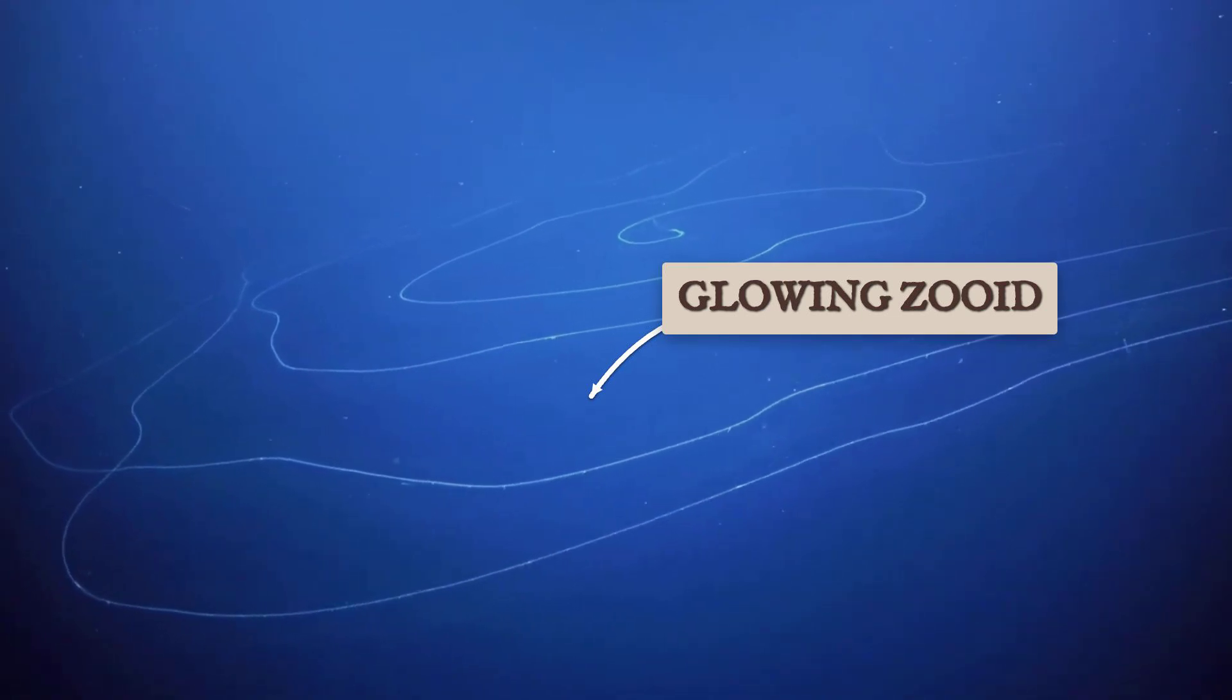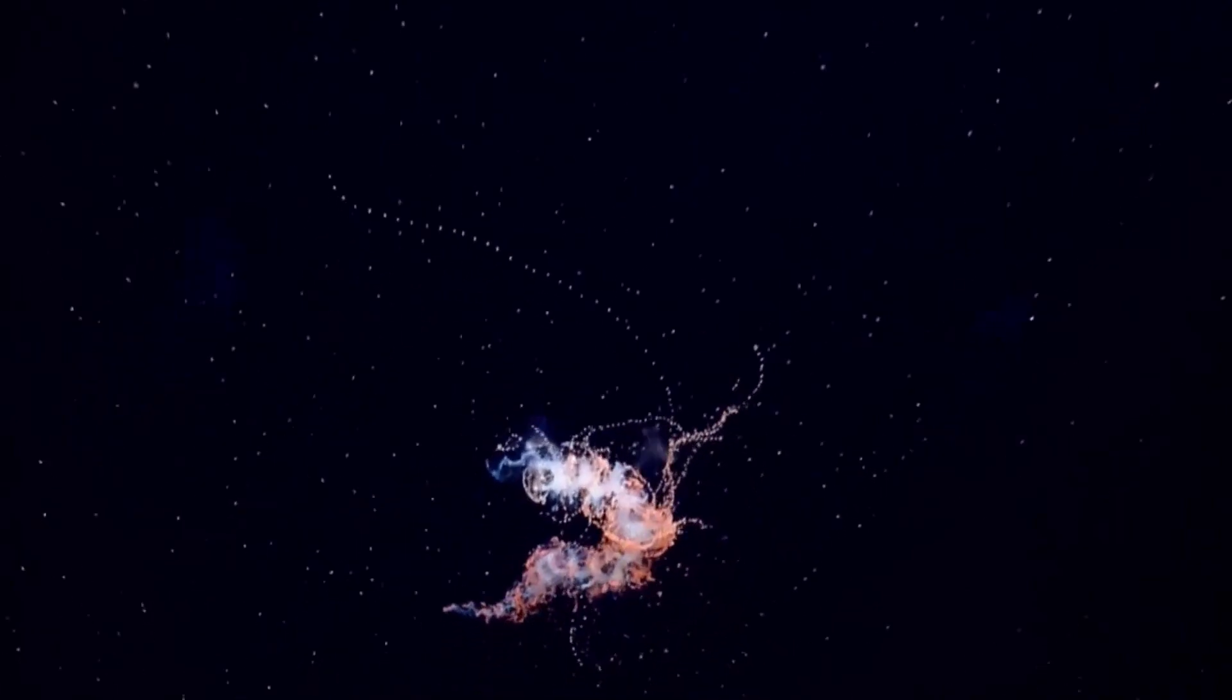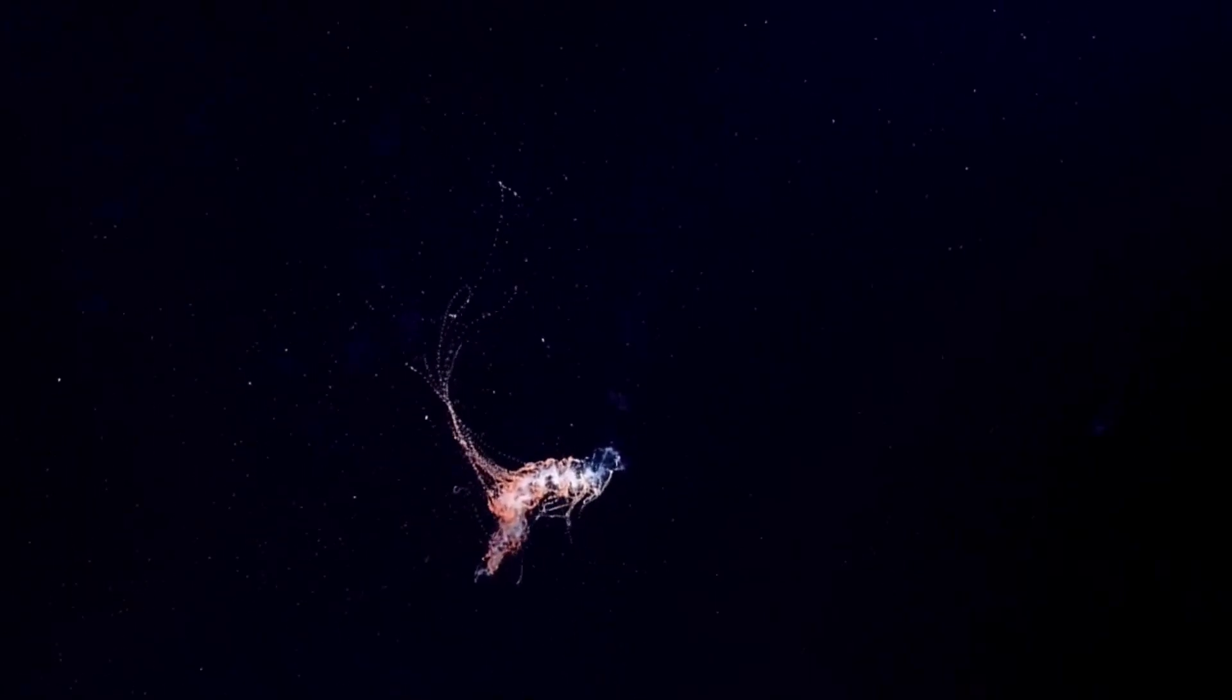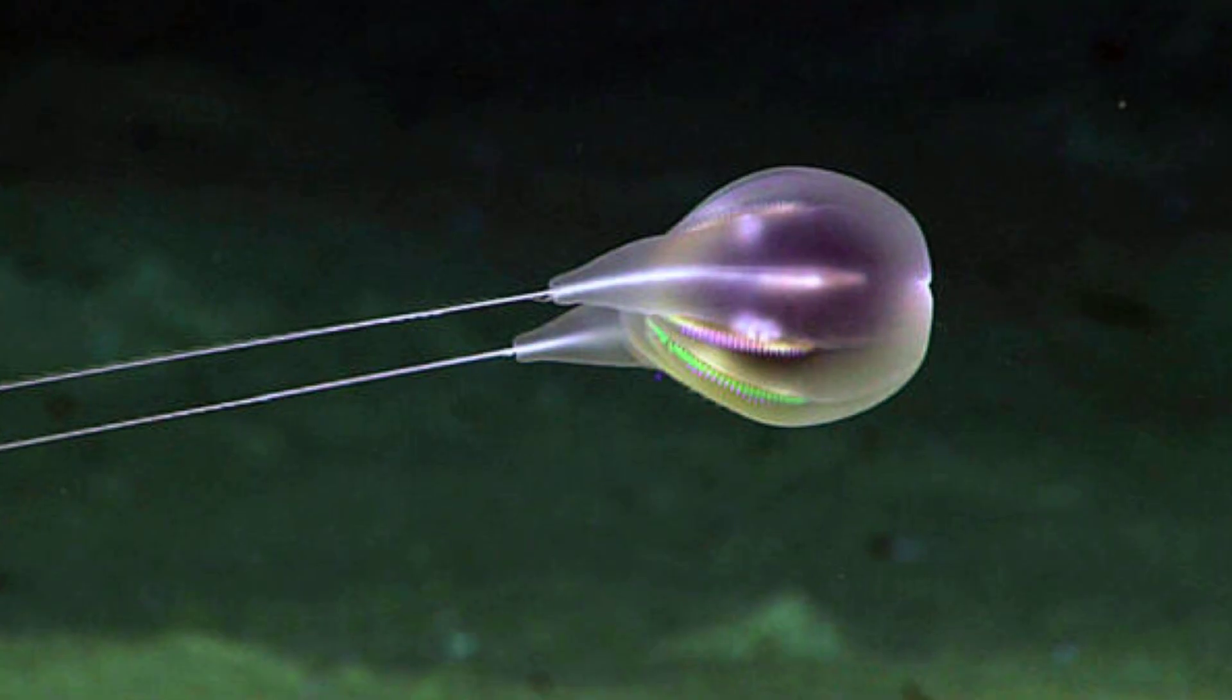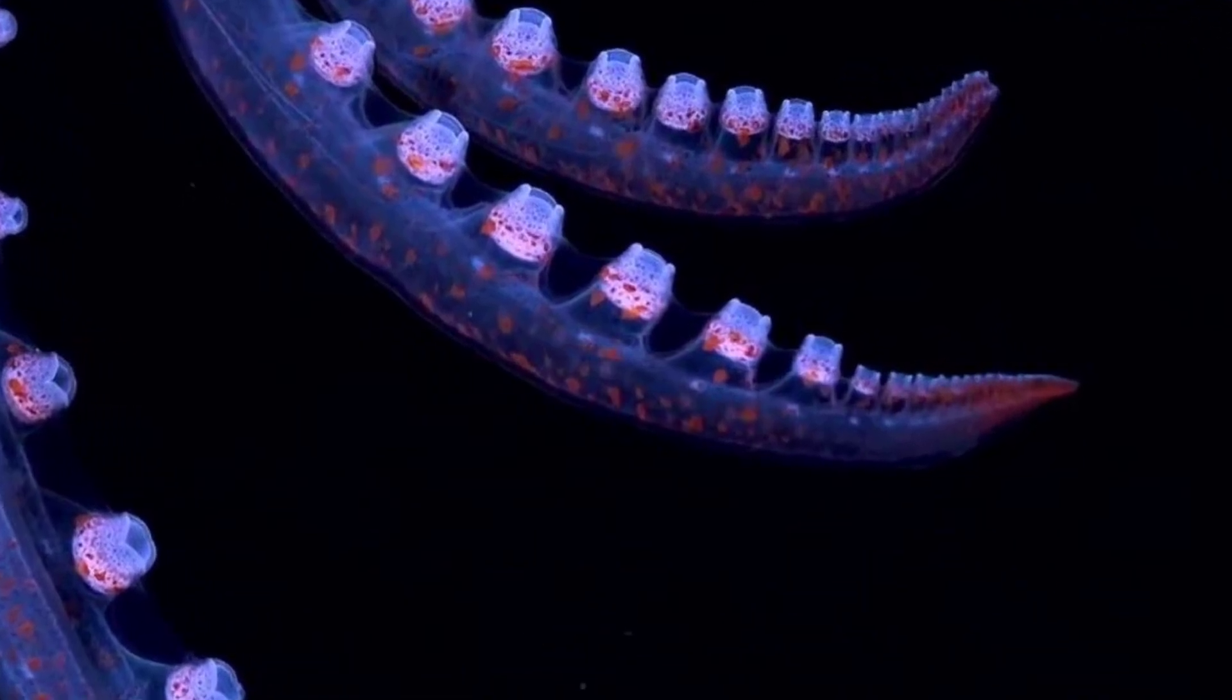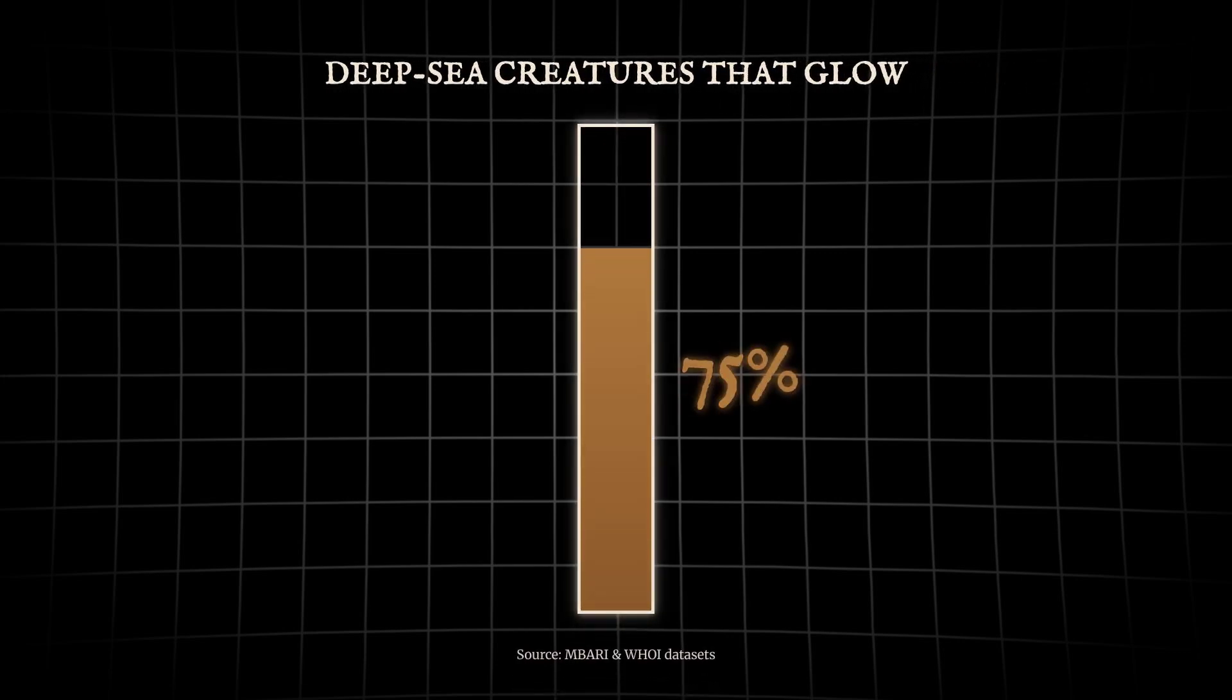Siphonophores, long colonial chains stretching meters through the abyss, coordinate waves of light across dozens of individual bodies. Each pulse travels down the line, synchronized but unexplained—a living signal relay lost to science. These creatures break the rules, rewriting what light can do in the deep. Seventy-five percent of all deep sea animals can glow, but even among the millions, some displays remain beyond explanation.